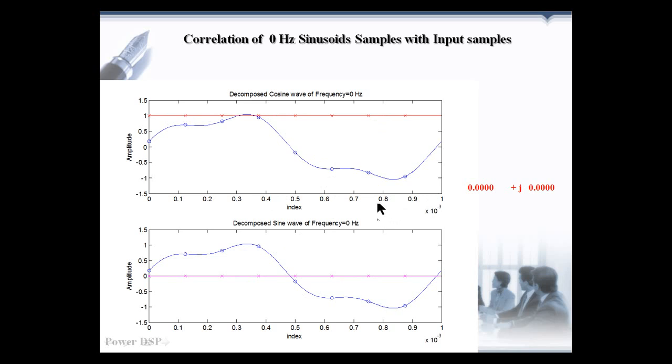For this, we have to do point-by-point multiplication between the input samples and the cosine samples. Then sum it to form the real part. Similarly, summation of the point-by-point multiplication between the input samples and the sine samples has to be done to form the imaginary part. We got 0. So, there is no DC component present in the input signal.